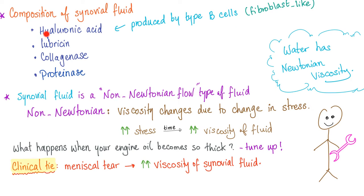Composition of synovial fluid: hyaluronic acid produced by type B cells, which are fibroblasts or fibroblast-like cells; lubricin, the protein of lubrication — an excellent name; collagenase and proteinase. The synovial fluid is a non-Newtonian type of fluid.